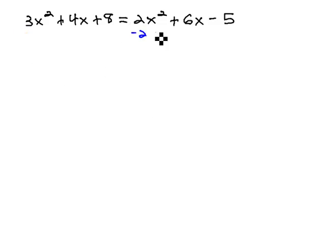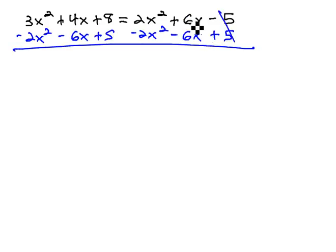To do that, we'll subtract 2x squared from both sides, subtract 6x from both sides, and add 5 to both sides. That way, the right side will completely subtract out to 0.